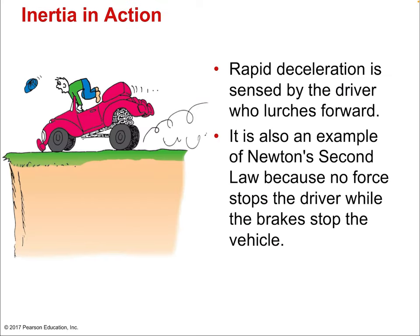Let's consider inertia in action. When you experience rapid deceleration and slam on the brakes, you lurch forward because of your own inertia. Inertia is mass — it's measured in kilograms. Since you have mass, that's why you want to keep moving when the car suddenly stops. It is also an example of Newton's second law, because no force stops the driver while the brakes stop the vehicle. Newton's second law deals with acceleration — in this case, the truck had a very quick deceleration.